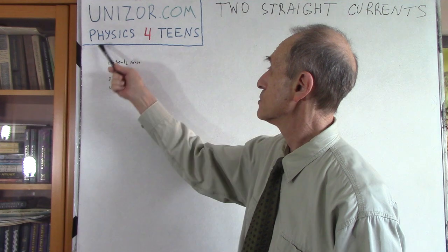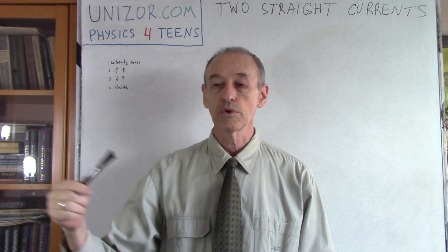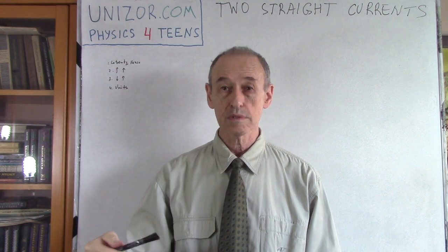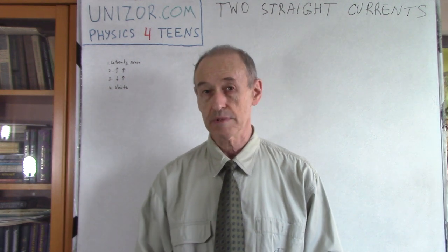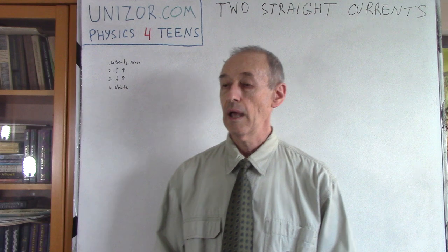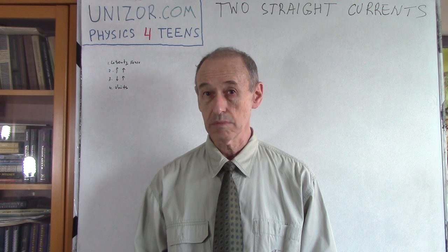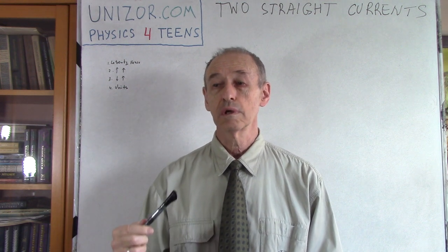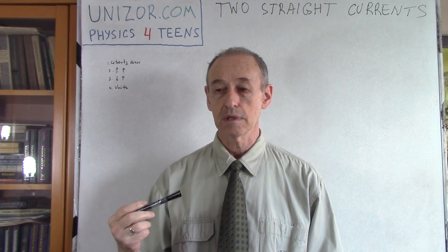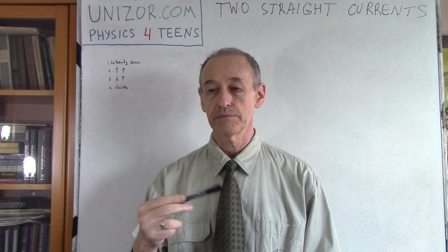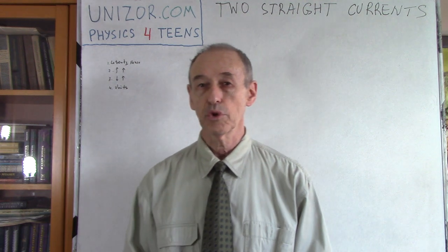This lecture is part of the course called Physics for Teens, presented on the website Unizor.com. If you go to this website, you have to choose the course Physics for Teens — and by the way, there is also a Math for Teens, which is kind of a prerequisite for this course. In Physics for Teens, you might choose the Electromagnetism subject, and this lecture is under the Magnetism of the Electric Current topic.